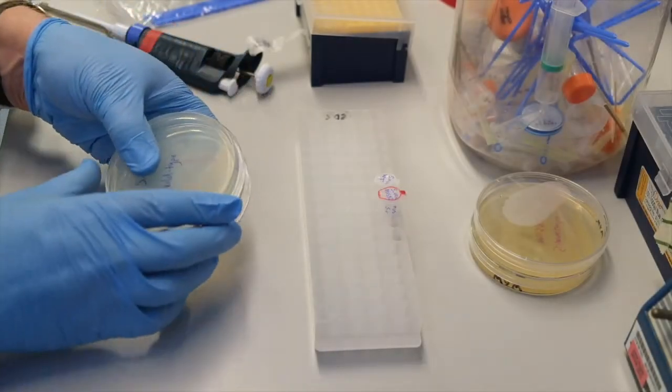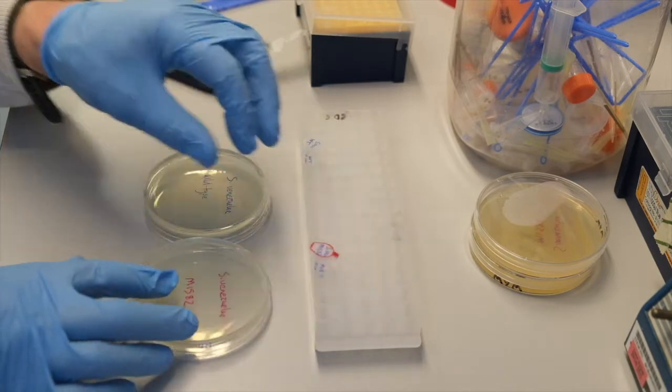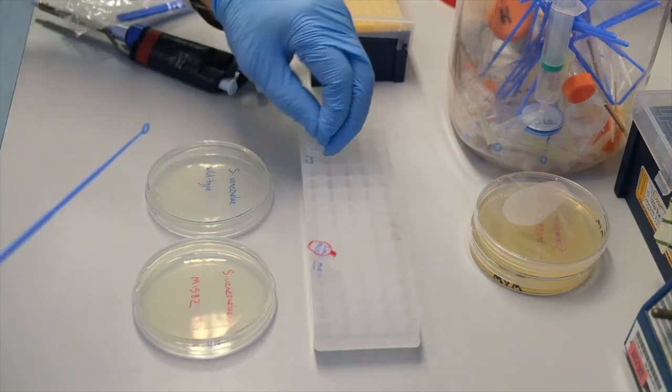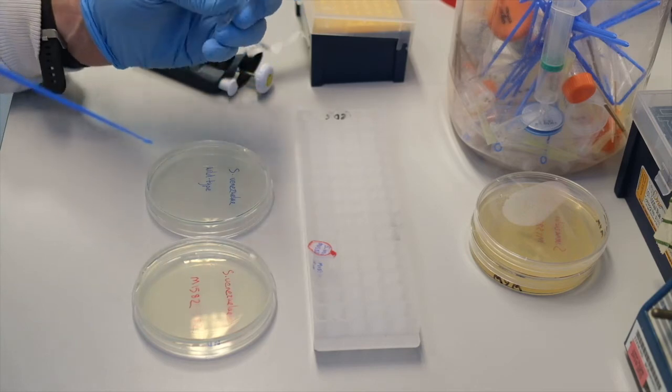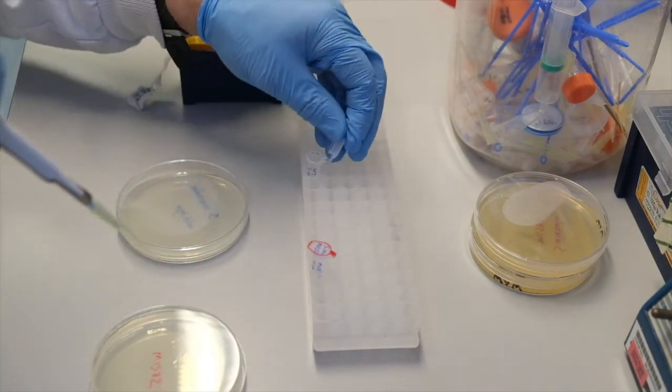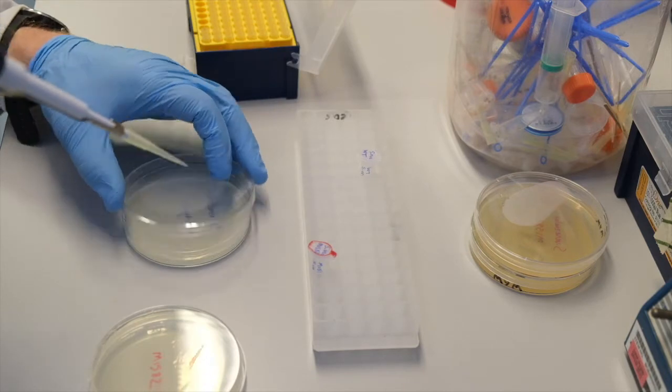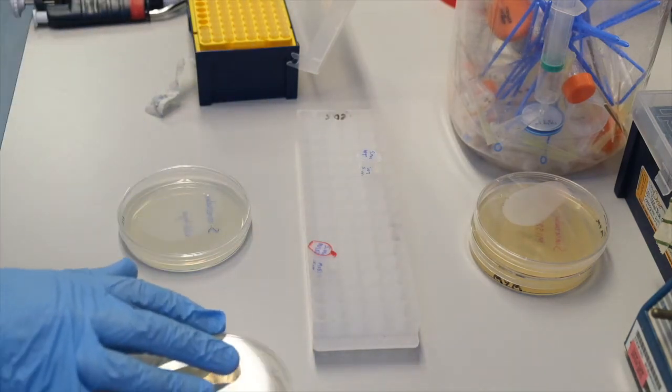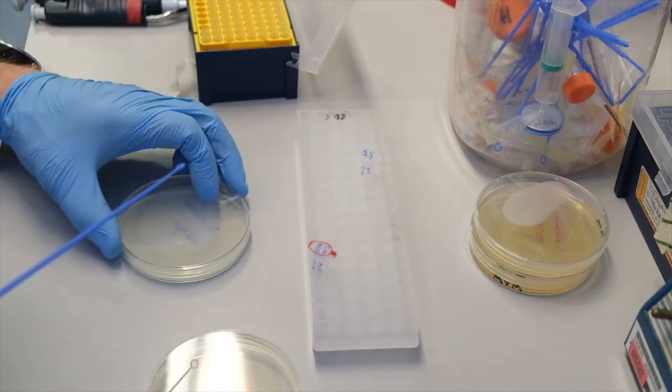Finally, we will streak out Streptomyces venezueli strains on nutrient agar plates. We could dip the loop directly into our spore stock, but unfortunately it doesn't fit into the bottom of the Eppendorf tube. Instead, we will pipette 5 microliters of spores directly onto the plate. This 5 microliters spot can then be streaked out with our first loop.